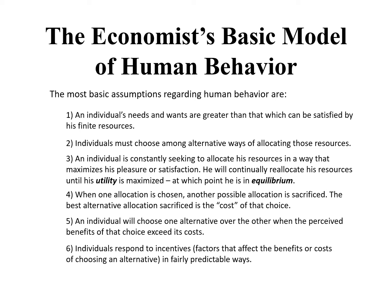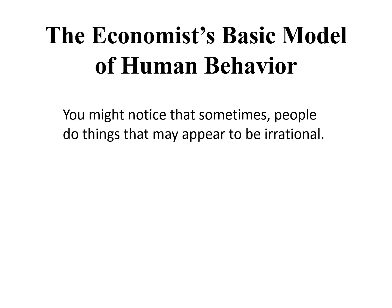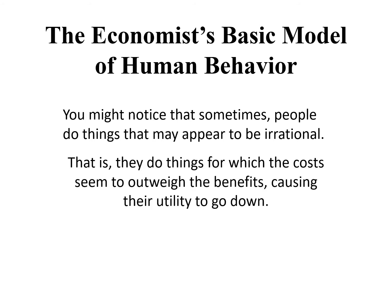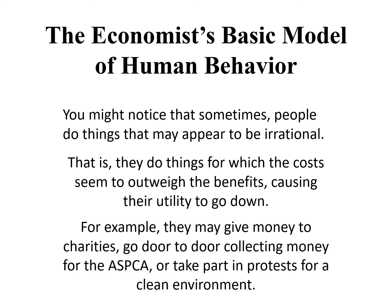The more predictable the response, the more accurate and valid will be the model. You may notice that sometimes people do things that may appear to be irrational — that is, they do things for which the costs seem to outweigh the benefits, causing their utility to go down. For example, they might donate money to a charity. Don't they realize that they could be buying a lot of stuff with that money? Stuff that would give them a lot of utility?